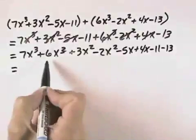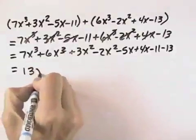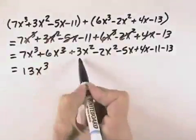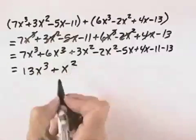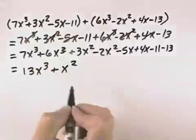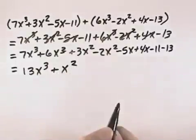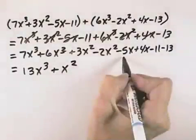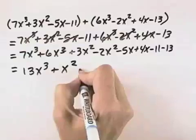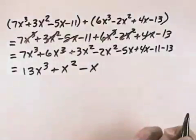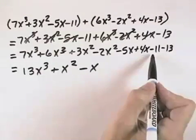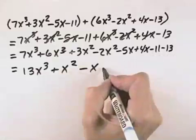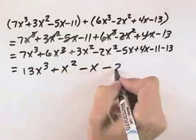So 7 plus 6 is 13x cubed. 3 minus 2 is 1x squared — I can put the 1 in front, but it's unnecessary, so I can just write x squared. And negative 5 and positive 4 is minus 1x, but I don't need the 1 in front, so I can just write minus x. And finally, negative 11 minus 13 is the same as negative 11 plus negative 13, which is negative 24.